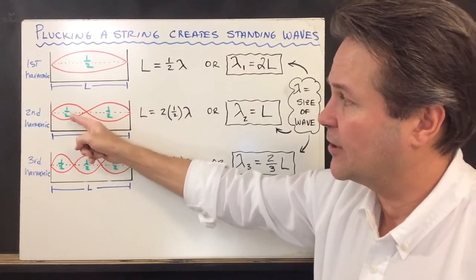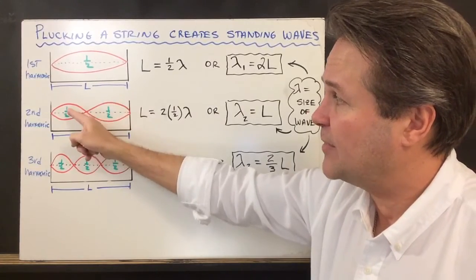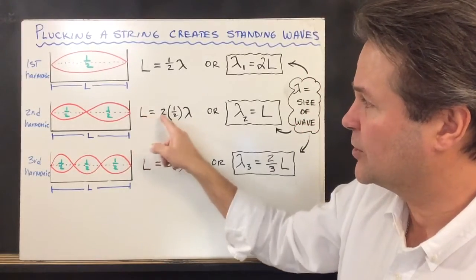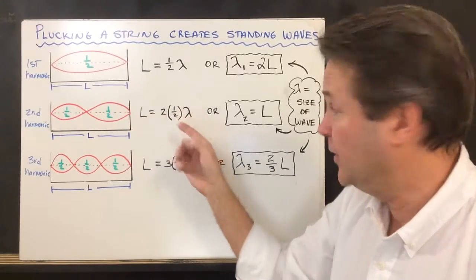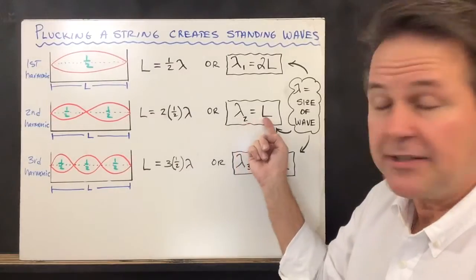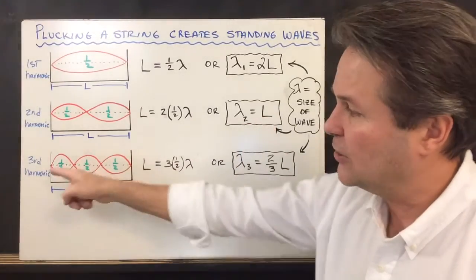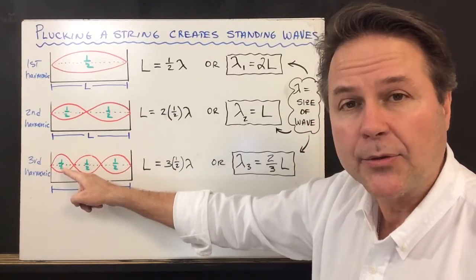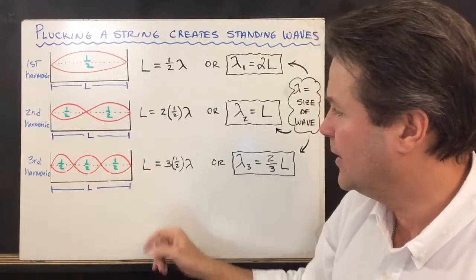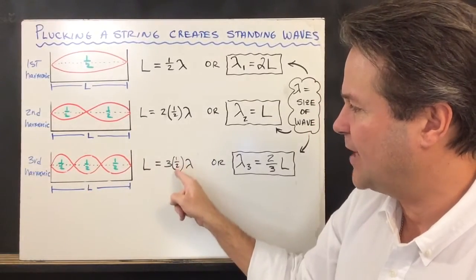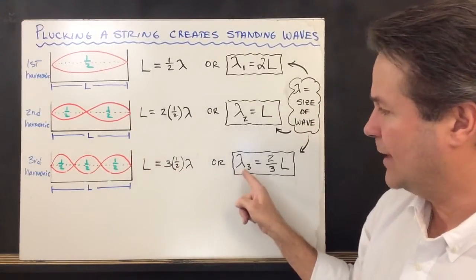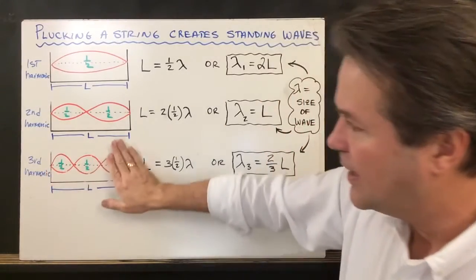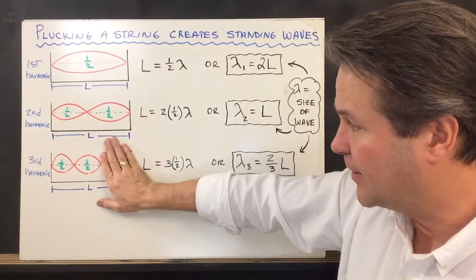If we look at the second harmonic, it has two antinodes in it, which means we have a complete wave cycle. So the length of the string corresponds to two halves, or two over two equals one — the wavelength of the second harmonic is equal to the length of the string. The third harmonic has three antinodes, or three half-waves, and the length of the string corresponds to three-halves lambda, so lambda for the third harmonic is two-thirds the length of the string.